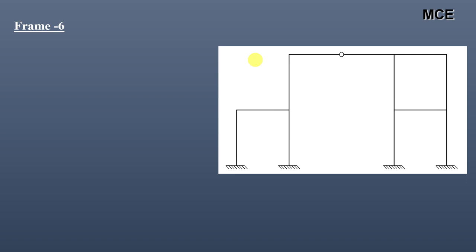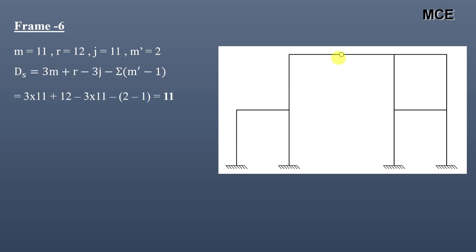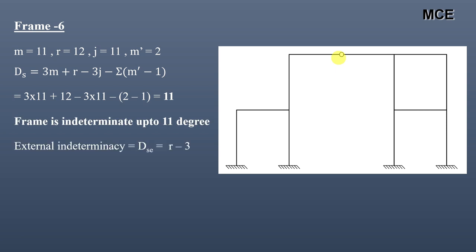For Frame 6, we can see it has a total of 11 members, 12 reactions, 11 joints, and 1 internal hinge. The number of members meeting at this internal hinge is 2, so m′ = 2. The value of ds = 11, so this frame is indeterminate to 11 degrees. External indeterminacy = 12 − 3 = 9. Internal indeterminacy = 11 − 9 = 2.